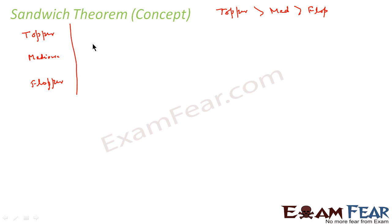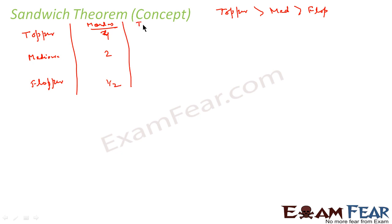On a particular day, let's suppose on Monday, the topper watched for four hours, the mediocre watched for two hours, and the flopper watched for half an hour. On Tuesday, the topper watched for five hours, the mediocre for three hours, and the flopper for four hours. These are some regular statistics.